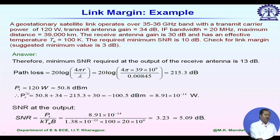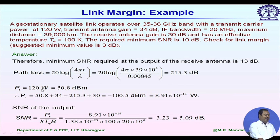Transmitted power Pt is 120 watts, which equals 50.8 dBm. In dBm, any power P is represented by dividing by 1 milliwatt and converting to decibel scale. So 120 watts divided by 10^-3 gives 120,000, and taking 10 log of that value yields 50.8 dBm.